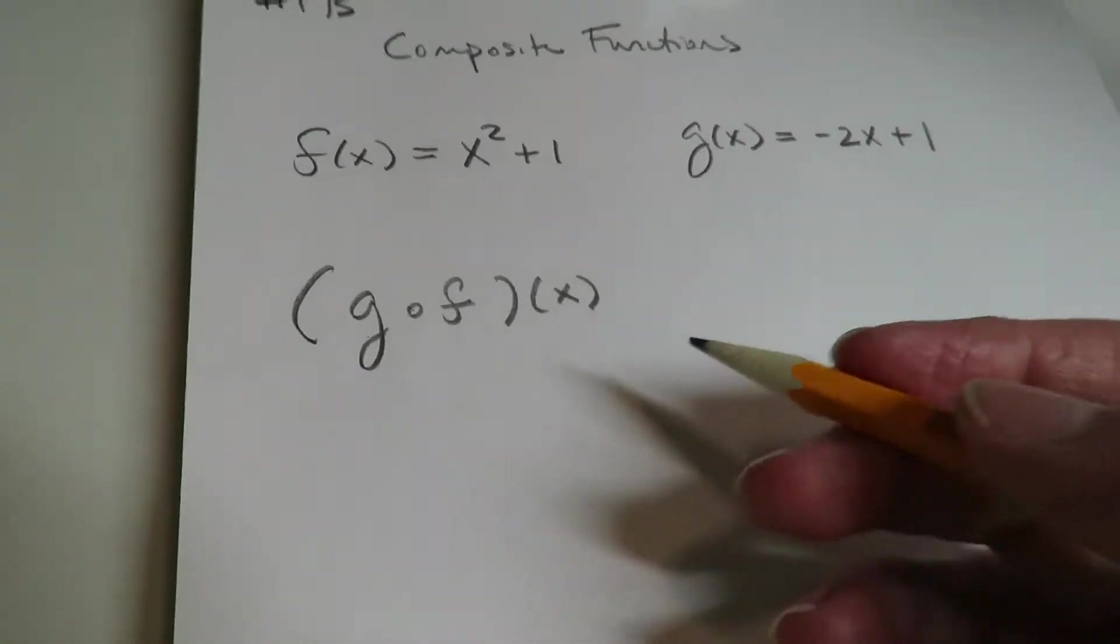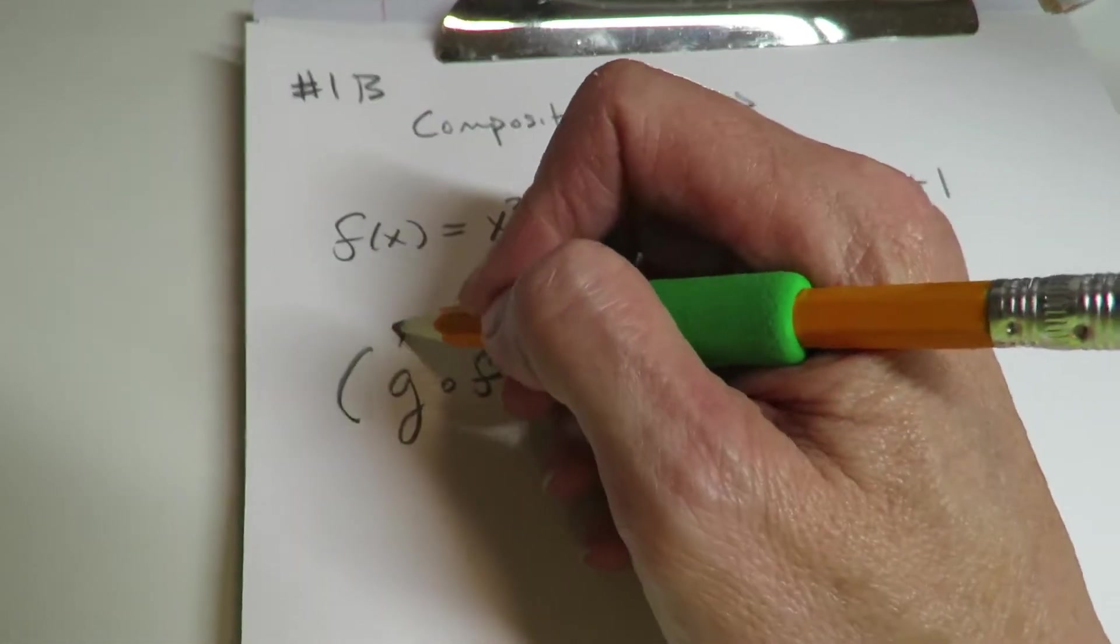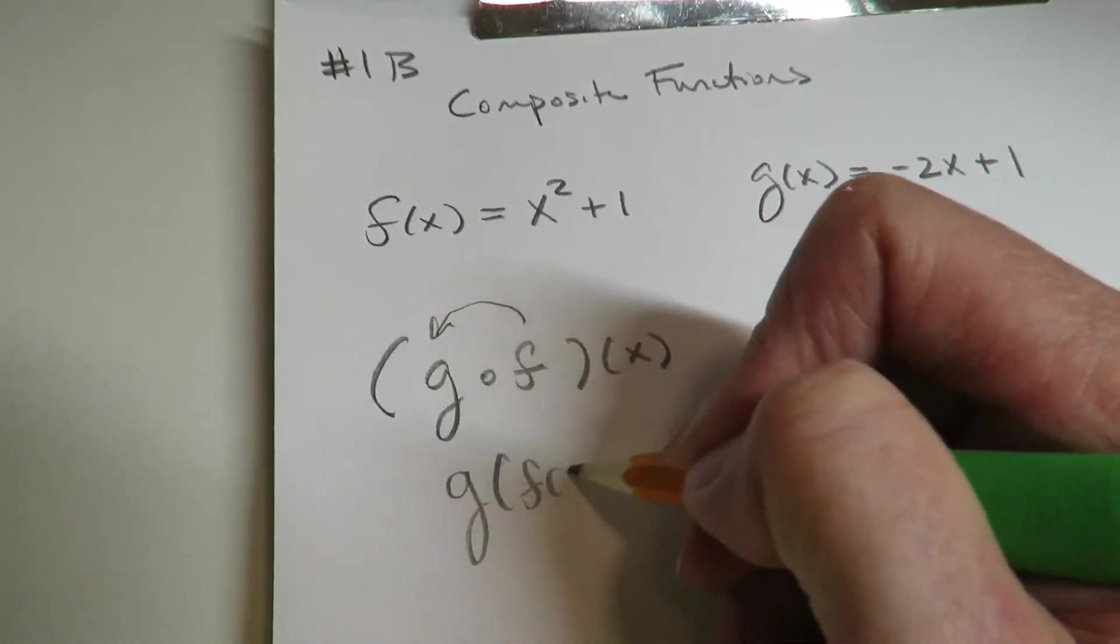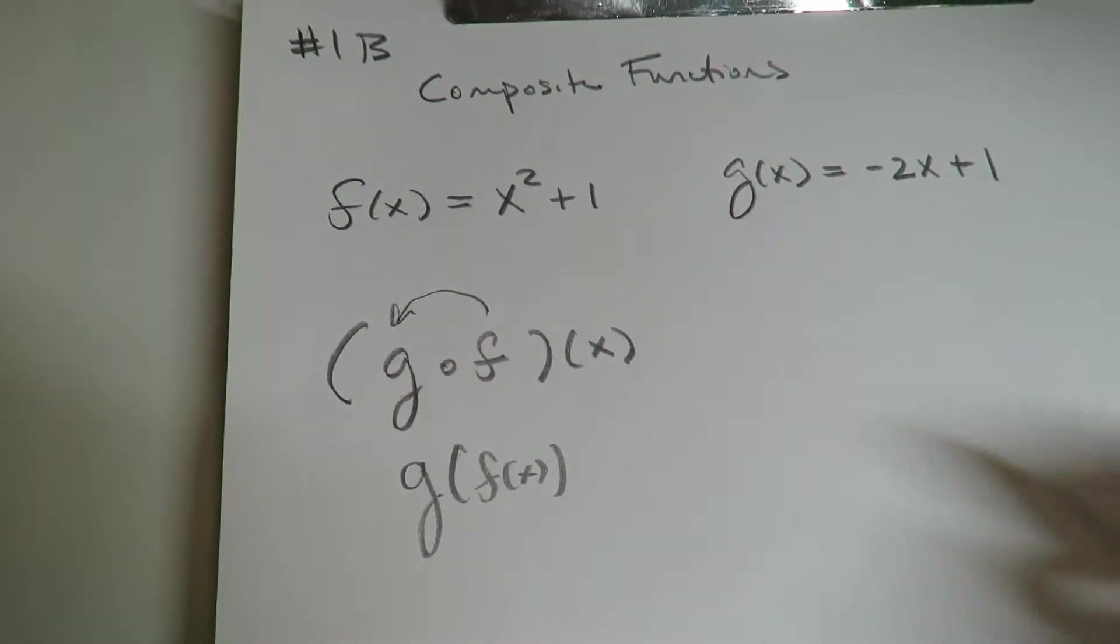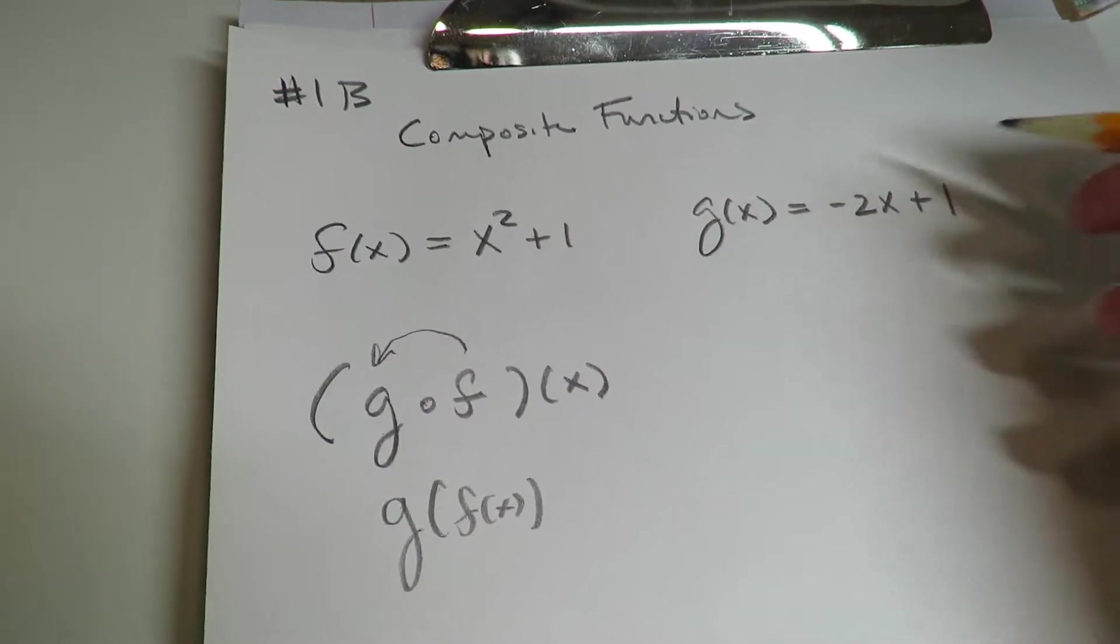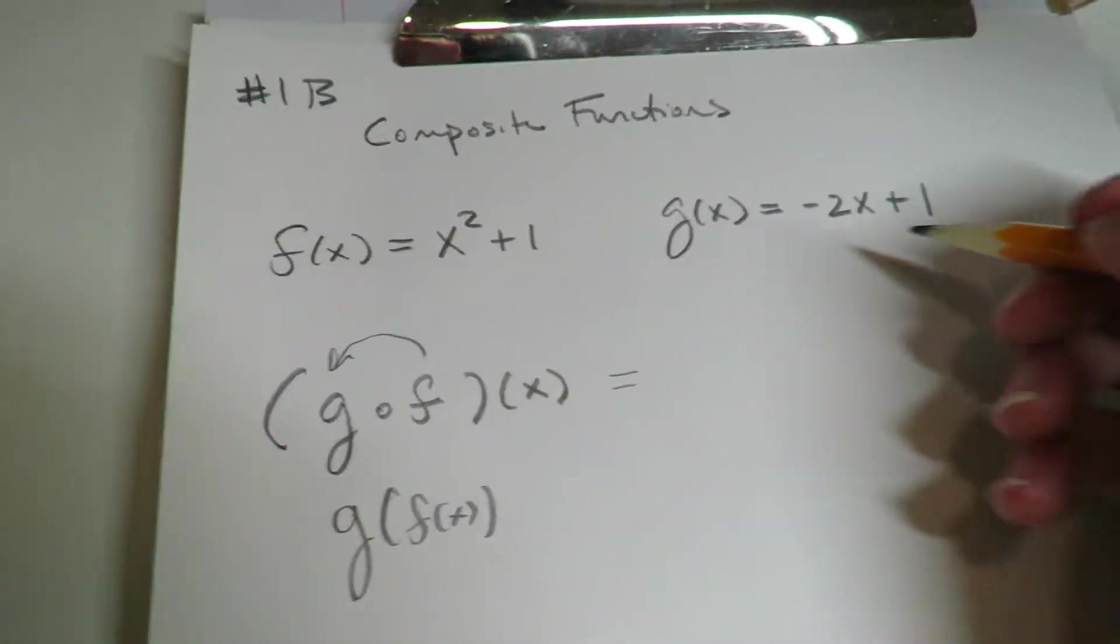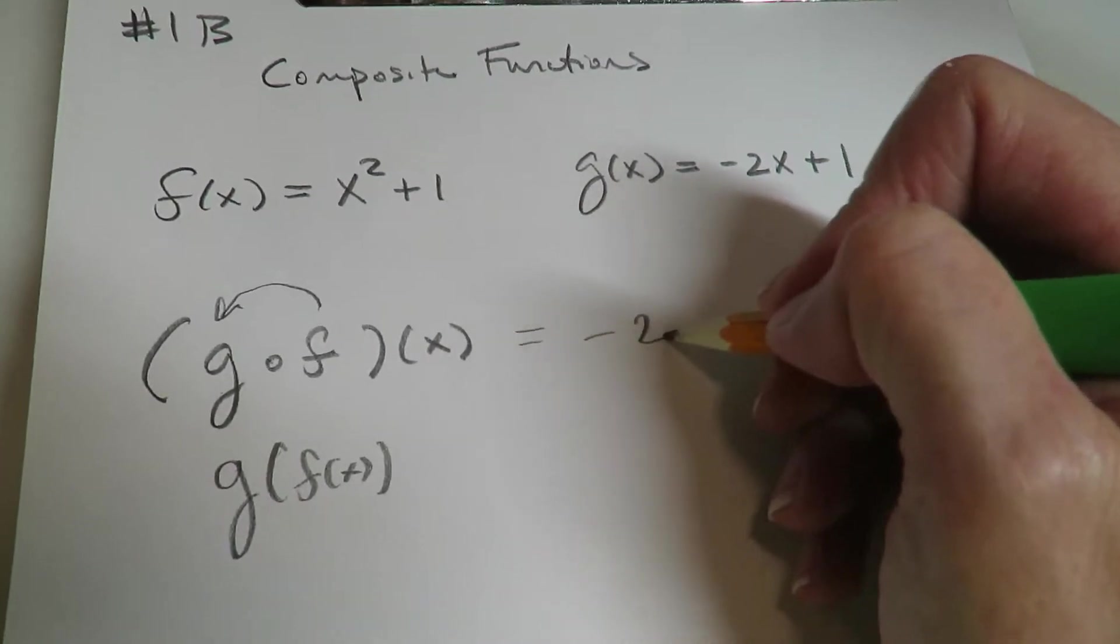So if we do G composite F, that means that F is going into G. So let's go ahead and try that. We're going to take the G function, where the X is, we'll put a box.